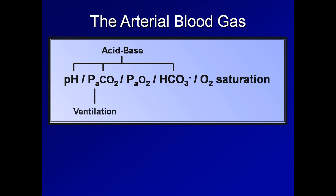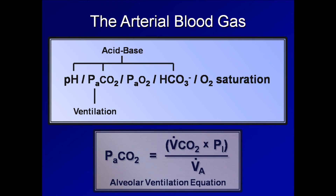Next, the PaCO2 alone tells us about the status of the patient's ventilation. It does this through the alveolar ventilation equation, which states the partial pressure of CO2 in arterial blood is equal to the product of the rate of systemic CO2 production and pressure of inspired air divided by alveolar ventilation. Therefore, if the PaCO2 can be measured, the systemic CO2 production is usually assumed based on the situation, and pressure of inspired air is also known, then alveolar ventilation can be calculated. Alveolar ventilation is, in turn, determined by the respiratory rate, tidal volume, and dead space.